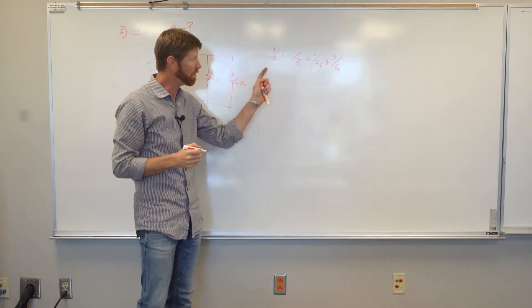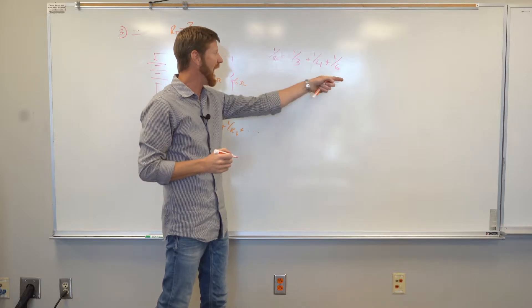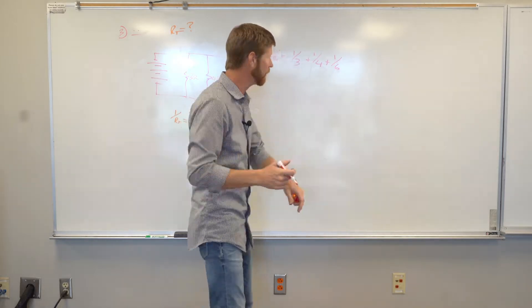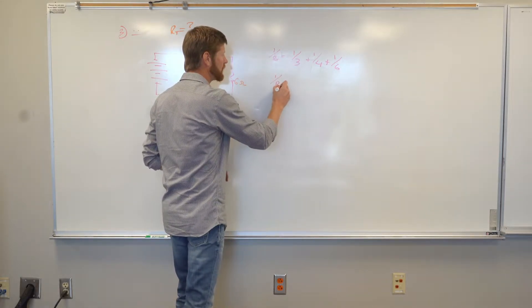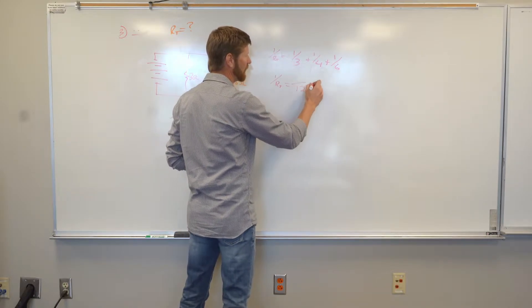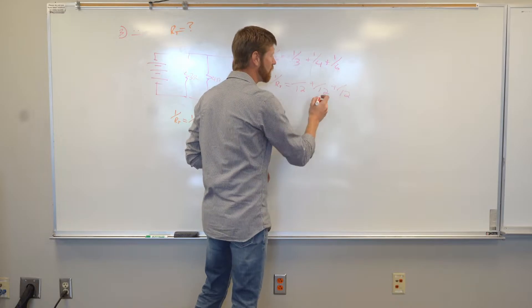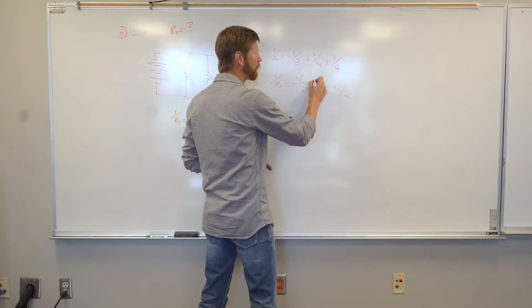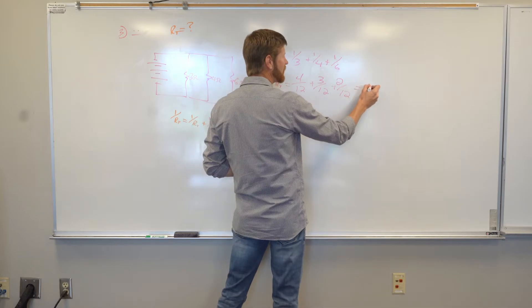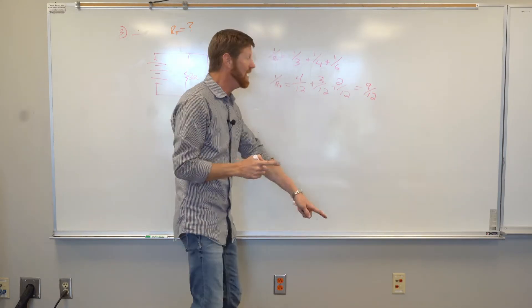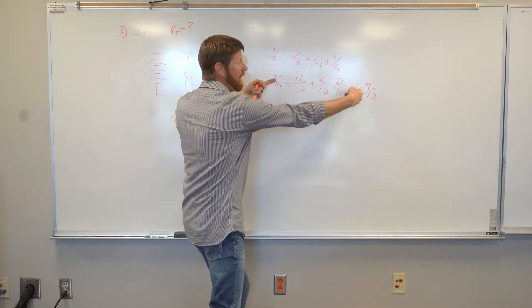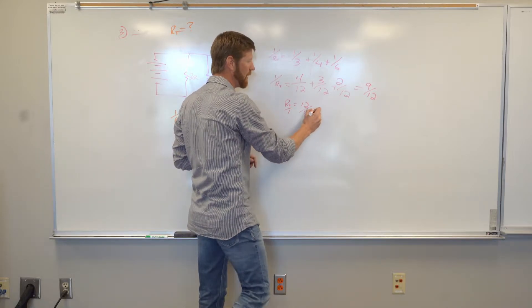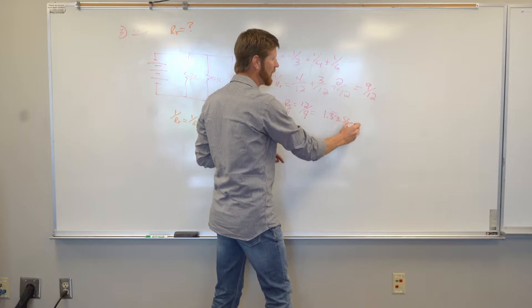Well, one over RT is equal to one over three plus one over four plus one over six. The problem is, if you remember from your math class, you cannot just add these fractions together without finding a common denominator. Of course, you can change decimals, use a graphing calculator, whatever. But to use our method, one over RT, the least common denominator in this case is going to be 12. We're going to make each one of these something over 12. What times three gets me 12? That's four. What times four gets me 12 is three. What times six gives me 12? That's two. Then I add these up. I get nine over 12, but I'm not done. Nine over 12 is one over RT. So I have to flip both sides. RT over one is going to be equal to 12 divided by nine, which is 1.3 repeating ohms.